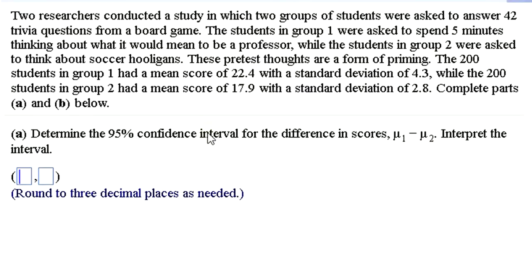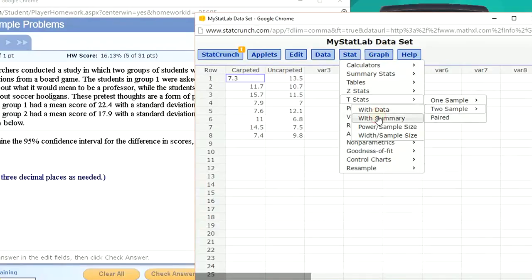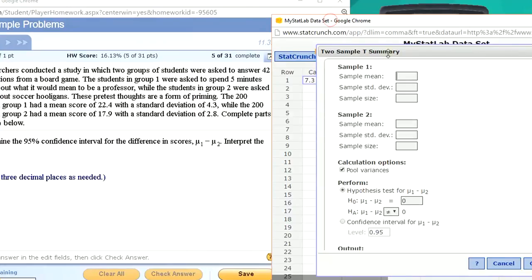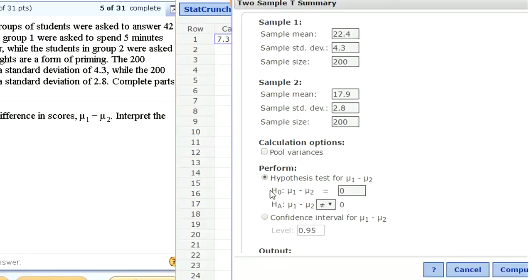So the 200 students, we're asked to find a confidence interval for the difference in scores. So I'm going to go to StatCrunch. Under the t-stats to sample with summary, I'm going to put in the necessary pieces to create confidence interval. For the first sample, we've got a mean of 22.4 and a standard deviation of 4.3 out of 200 sample size. Second population or second sample, this is hooligan thinkers, 17.9, 2.8 for the standard deviation. And again, a sample size of 200. I'm not going to pool variances. And I'm not going to choose a hypothesis test. I'm going to do confidence interval. I'm asked to do 95% confidence level. So that's what I'm going to choose, 0.95. Click compute and see what I get.